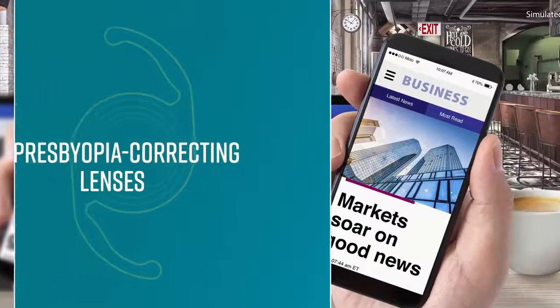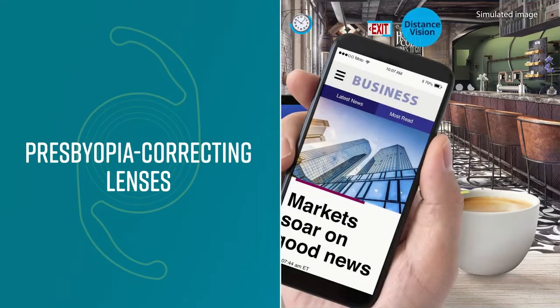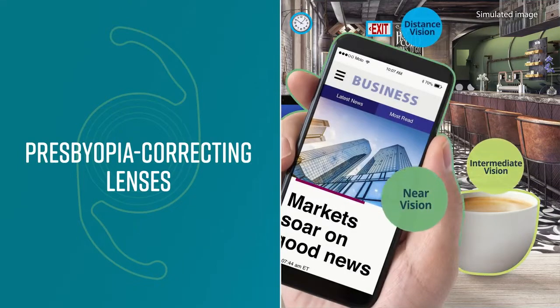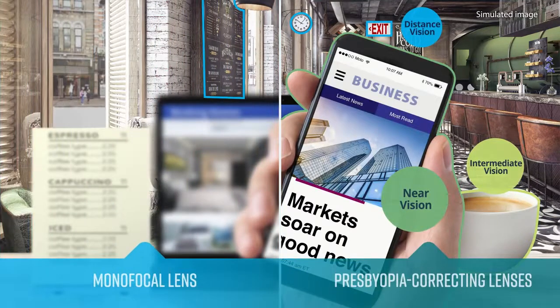If you have presbyopia, you're likely noticing a reduced ability to focus on nearby objects. This is caused by the gradual stiffening of your natural lens. Presbyopia-correcting lenses are designed to help reduce your need for glasses at all distances.